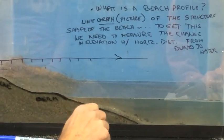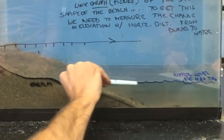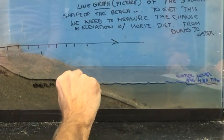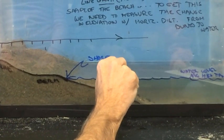I'm also going to indicate the water line. We know that the water level changes with tides, but just as a reference line, we could indicate a position of the shoreline.